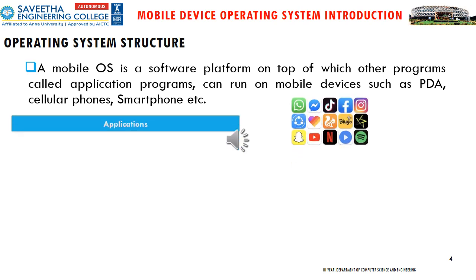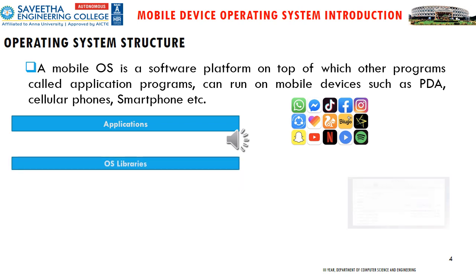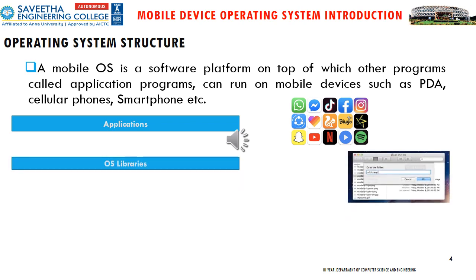There are four layers in this OS structure. The first layer is the application layer, which is the apps we use in our smartphones. The second layer contains OS libraries, which includes functions for file manipulation, getting the current date and time, and other facilities related to the operating system.